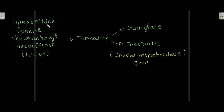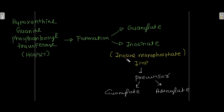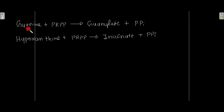Hypoxanthine-guanine phosphoribosyltransferase, also abbreviated as HGPRT, catalyzes the formation of guanylate and inosinate, that is inosine monophosphate (IMP). IMP acts as a precursor for guanylate and adenylate. The reactions are: guanine plus PRPP gives guanylate plus pyrophosphate, and hypoxanthine plus PRPP gives inosinate (IMP).